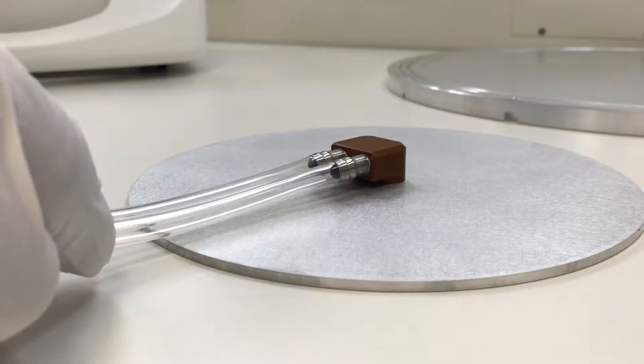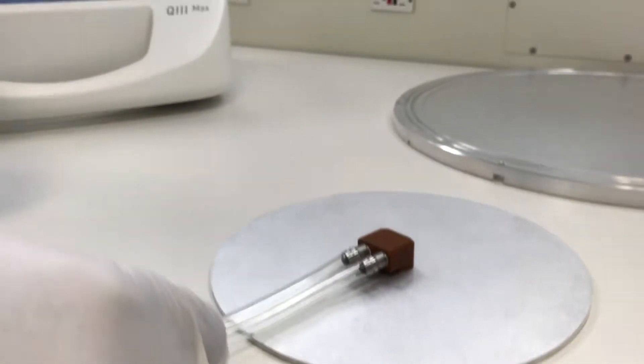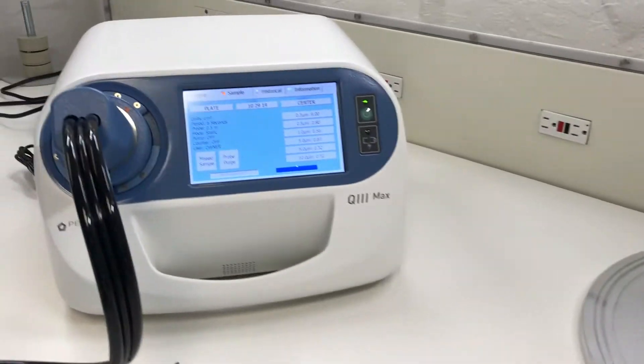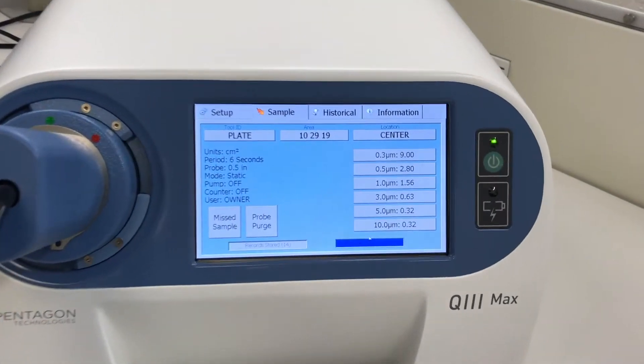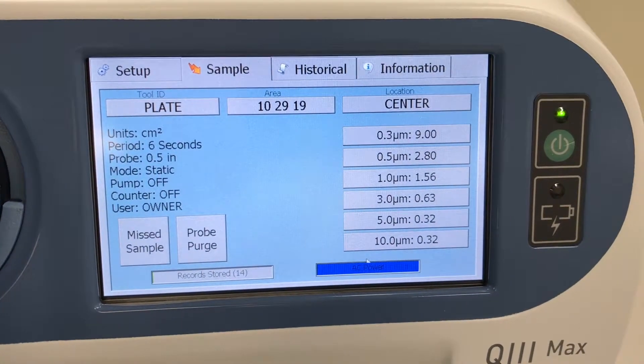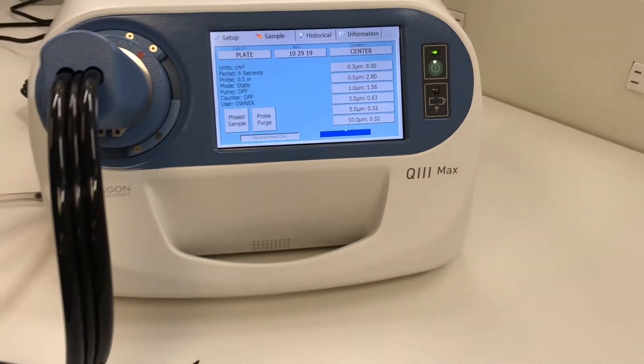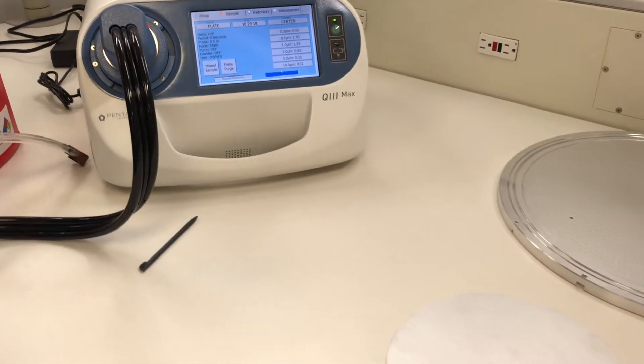Now we are going to measure the surface particles on a blank aluminum plate that has already been wiped with a wiper and IPA. The results show that the particle density is nine particles per centimeter squared greater than 0.3 microns measured in six seconds. Notice how the screen also shows the settings.